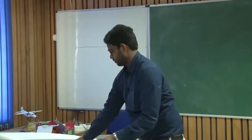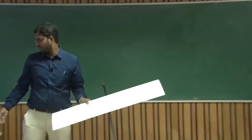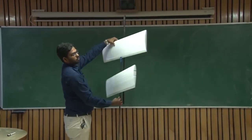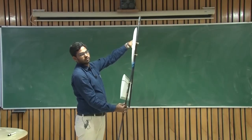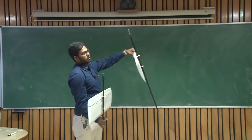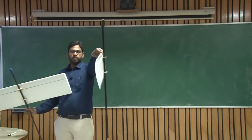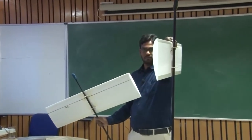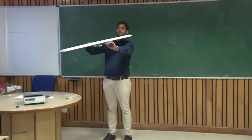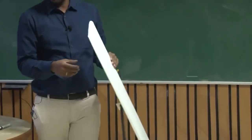Let us take another wing. This is a cambered airfoil - a wing of one meter span. Both of these have the same planform geometry, but what is the difference between these two wings is the cross-sectional profile. We have used different airfoils. The one in my right hand is with a symmetric airfoil and the one in my left hand is with a cambered airfoil.